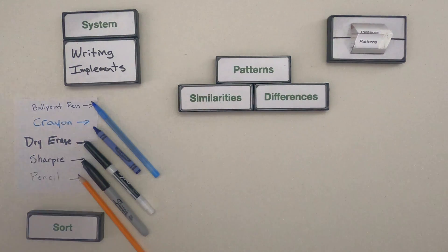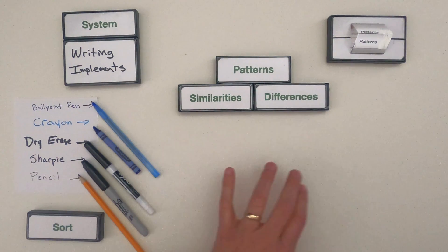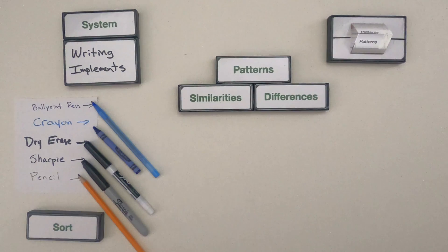All right, I set up a new system for you. I've got five writing implements from a ballpoint pen to a crayon, dry erase marker, Sharpie, and pencil. So what I want you to try to do is pause the video, go through and list similarities, differences, and then start thinking about how we could sort those. You could use a piece of paper or use the Google slide deck that's below this video. When you're done, unpause the video, and then let's compare our thinking.